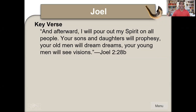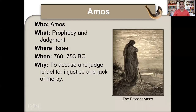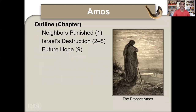Joel is prophesying about the outpouring of the Holy Spirit that would come in the New Testament when people receive Christ and are baptized or filled with the Holy Spirit. Now the prophet Amos — prophecy and judgment, located in Israel, 760 to 753 BC, to accuse and judge Israel for injustice and lack of mercy. The outline: neighbors punished in chapter 1, Israel's destruction in chapters 2 to 8, and future hope in chapter 9.